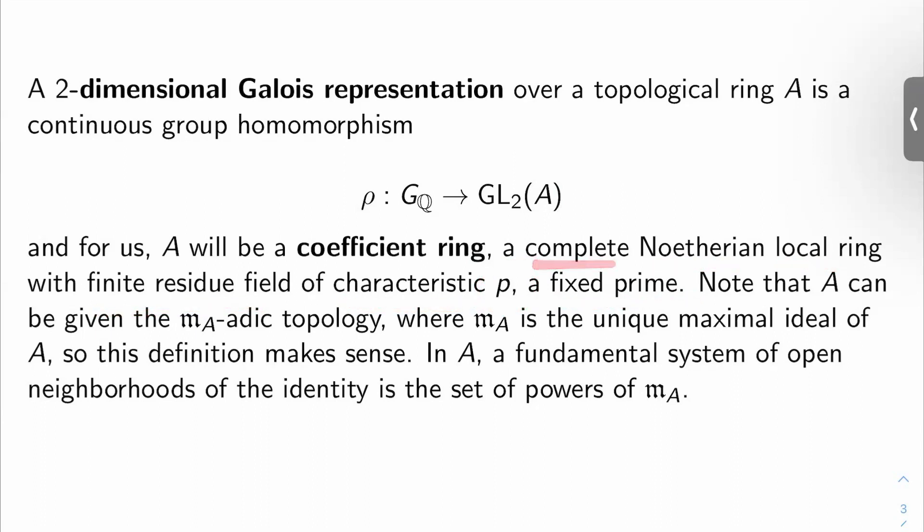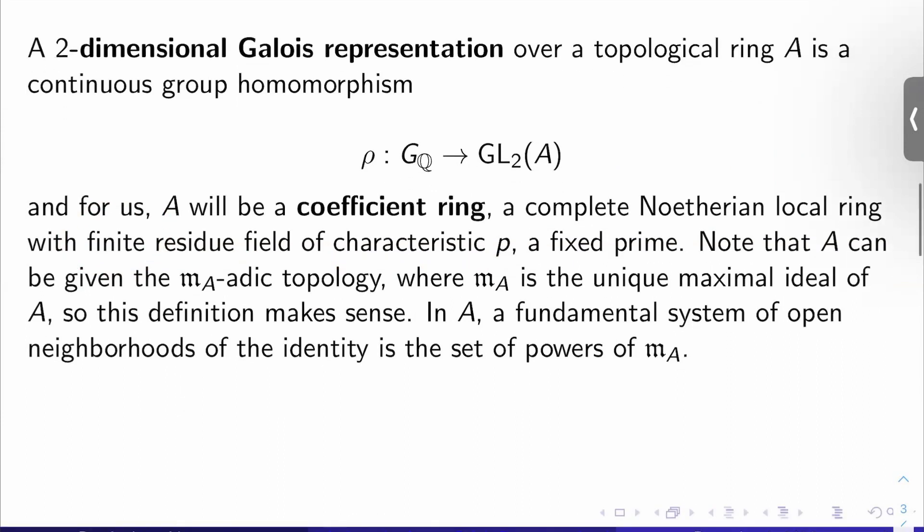So complete means kind of what you think it means. Noetherian, everybody knows Noetherian. Local ring, it has a unique maximal ideal. What's the residue field of a local ring? It's the ring mod its maximal ideal, right? So this is a field by abstract algebra class. That's called the residue field. We want that to be finite, and we want it to be characteristic p.